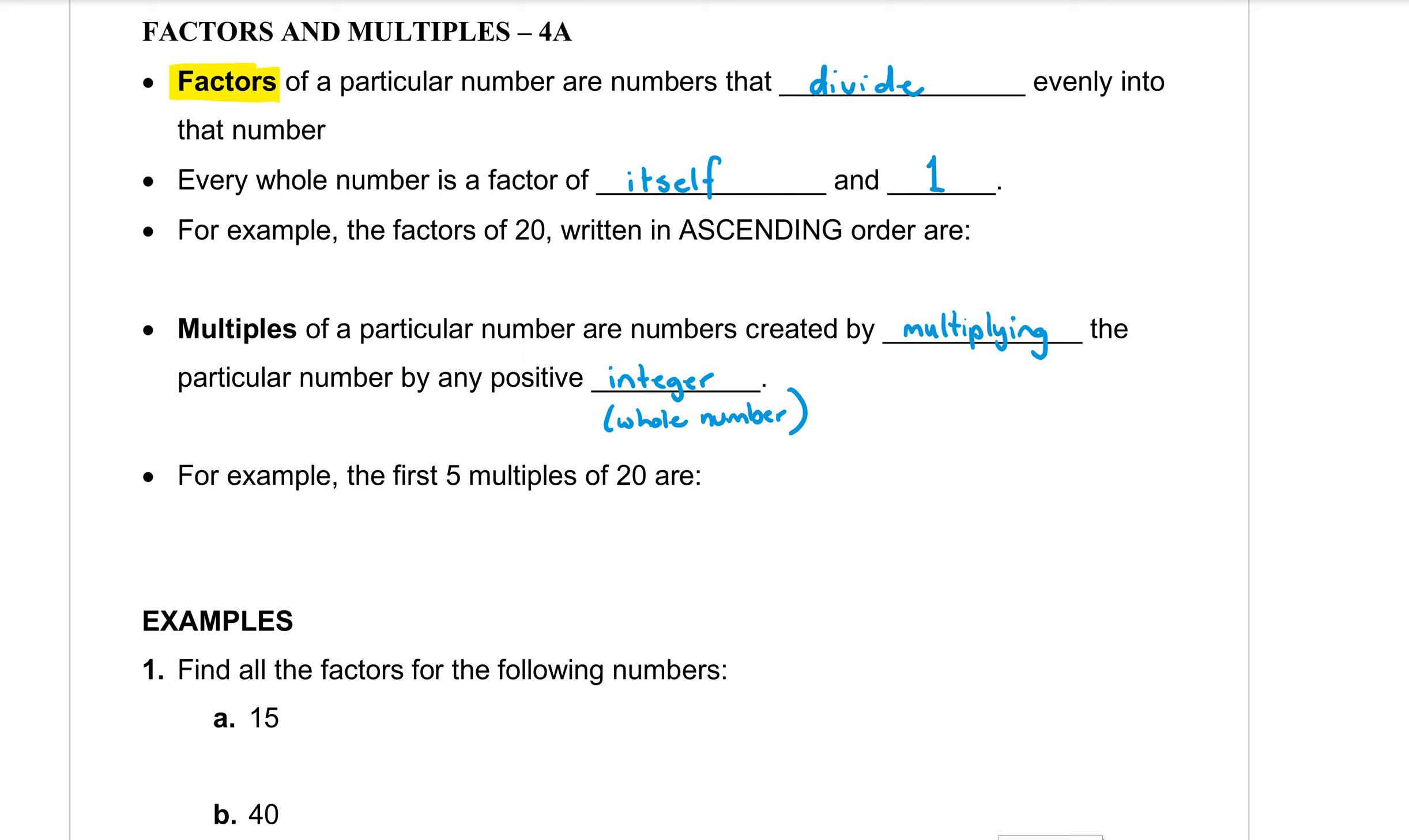Now if we want to find some factors, we're going to do an example here for the number 20. We want to find the factors written in ascending order. Ascending means increasing order from the smallest up to the largest. Now the first factor is always going to be 1. Then we want to check each number as we count upwards. So 2, does 20 divide by 2 nicely? Yes it does. So 2 is a factor.